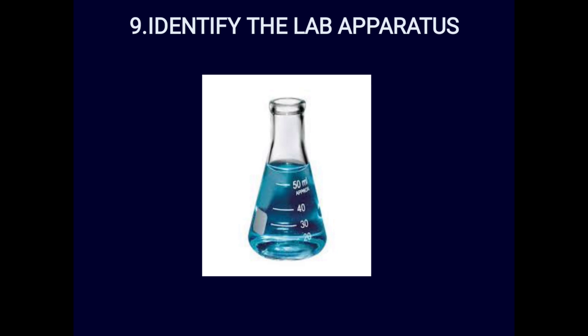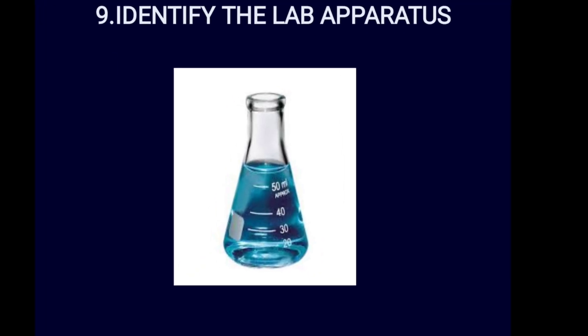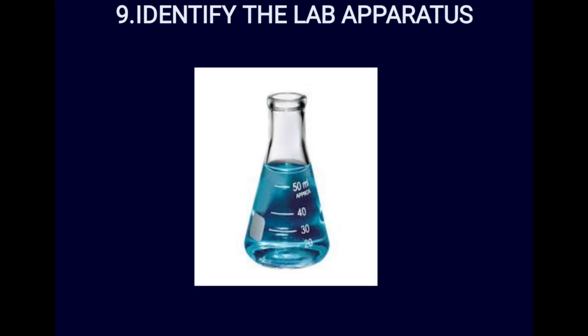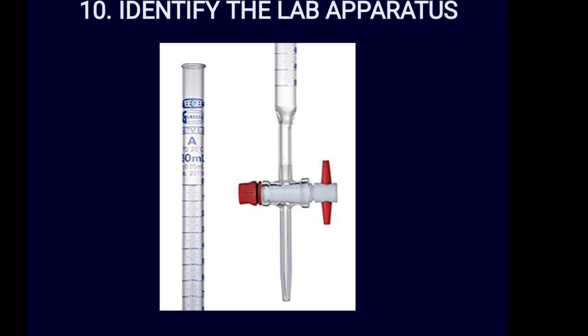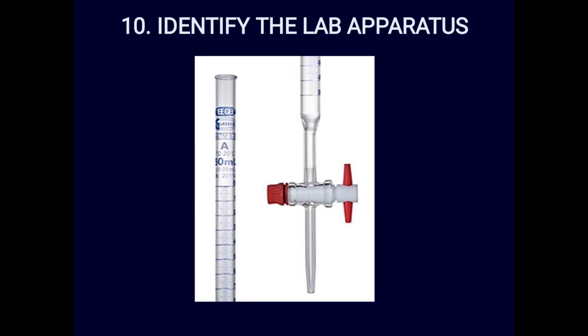Spotter nine: identify the lab apparatus. This is a conical flask — cone-shaped with graduation markings. It is usually used for titration such as acid-base titration. The answer is conical flask. Spotter ten is a burette, also used in acid-base titration.